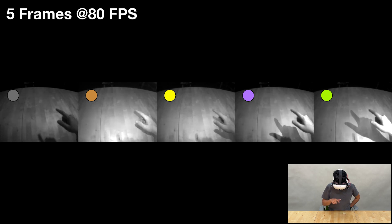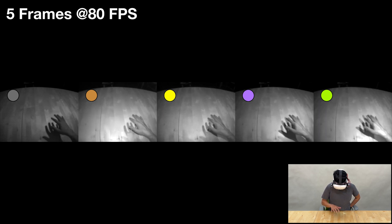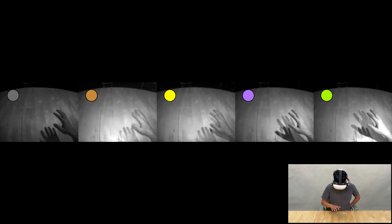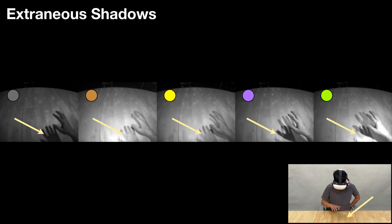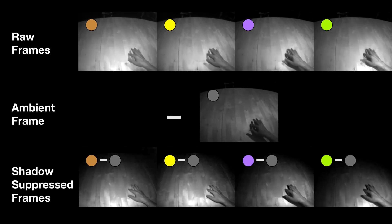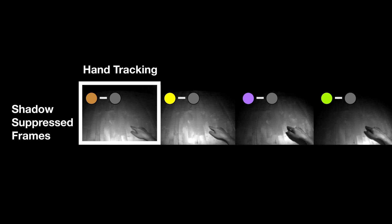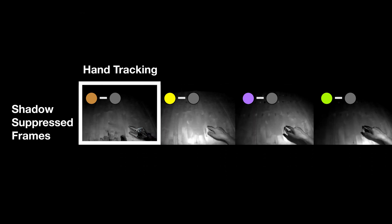Our camera triggers at 400 FPS, which means we produce this quintuplet of frames at 80 FPS. Our system must account for extraneous shadows cast by other light sources, such as the sun or indoor lighting. For this, we subtract the ambient light frame from the other four frames, which has the effect of removing these cast shadows. We then use the first illuminated frame, which has minimal shadows, for hand tracking.